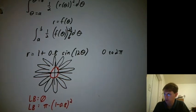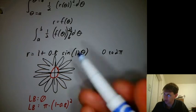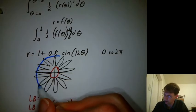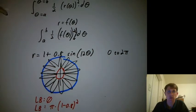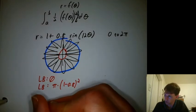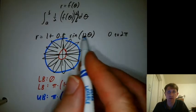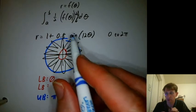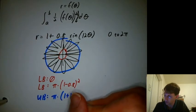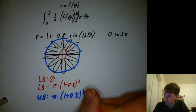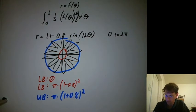How about an upper bound? We could draw a circle around the whole thing. And what's the largest value this takes on? It would be when sine is 1. So we'd have 1 plus 0.8 squared.